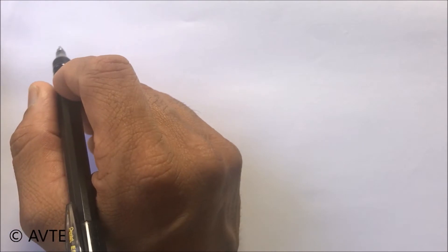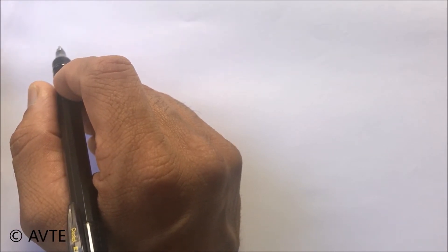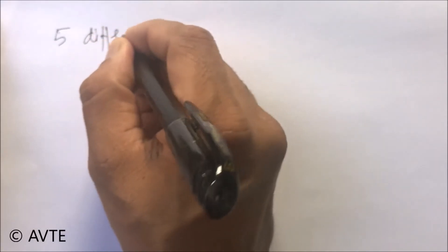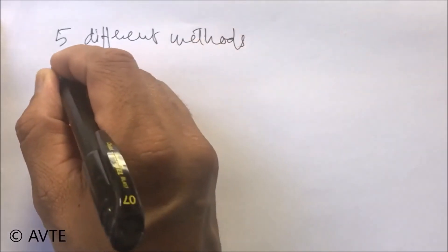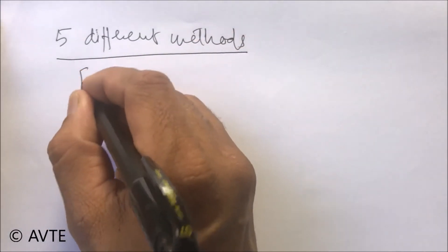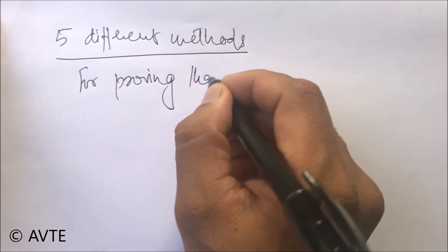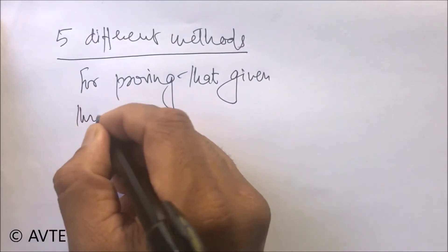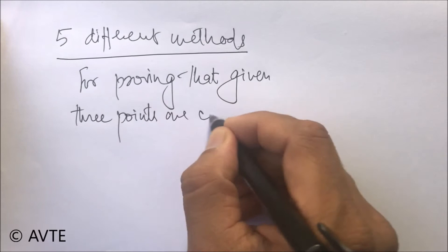Hello students, today we'll be telling you five different methods with which you can prove that the given three points are collinear for proving that given three points are collinear.